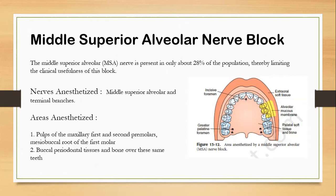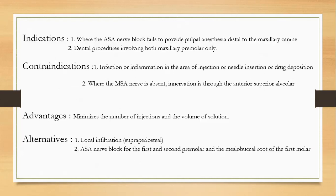Areas anesthetized include the pulps of the maxillary first and second premolars, the mesiobuccal root of the first molar, the buccal periodontal tissues, and bone over those same teeth. Indications: when the ASA nerve block fails to provide pulpal anesthesia to the maxillary canine, or when dental procedures involve both maxillary premolars only. Contraindications: infection or inflammation in the injection area, and when the MSA nerve is absent. Advantages: it minimizes the number of injections. Alternatives are local infiltration and the anterior superior alveolar nerve block.